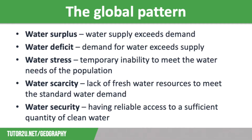There are many areas suffering from serious water deficit issues, and they're said to be experiencing water stress, which is a temporary inability to meet the water needs of the population, either because there is not enough water or because the water is poor quality following contamination. We also need to understand the term water scarcity, which is the lack of fresh water resources to meet the standard water demand, and the term water security, which is having reliable access to a sufficient quantity of clean water.